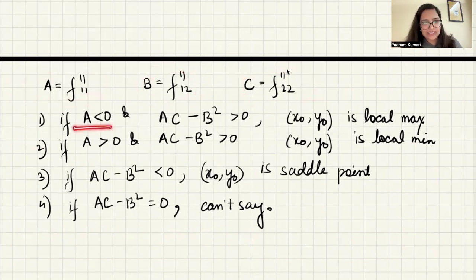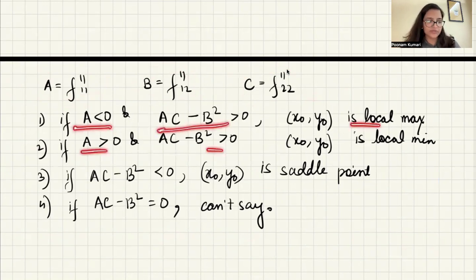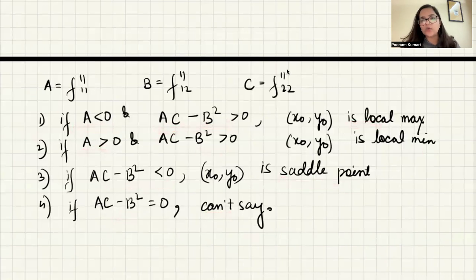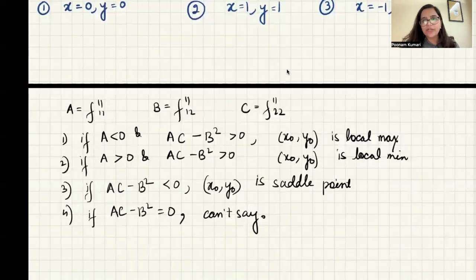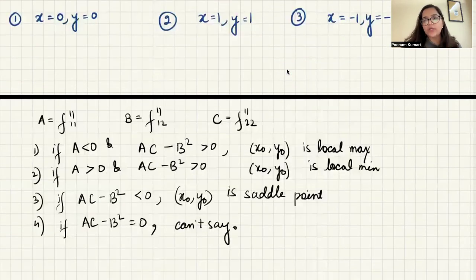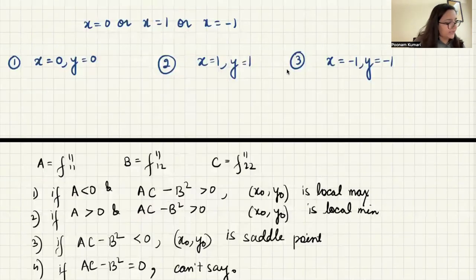If a < 0 and ac − b² > 0, this is a local max. If a > 0 and ac − b² > 0, this is a local min. If ac − b² < 0, it's a saddle point. If ac − b² = 0, then you can't determine the classification. Now you have to compute a, b, c for each of the three stationary points.